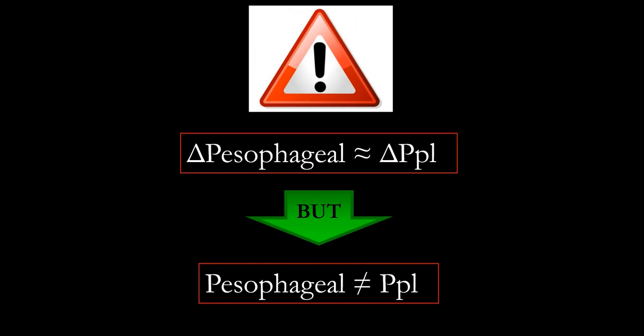What is the respiratory drive? If you take the esophageal pressure swings — what does it mean to look at pressure support without knowing what the patient does inside? I can set 20, 15, or 5 and have the same tidal volume, maybe. But look at what's happening inside — the swings may be 0, then 10, then 20. Without the pleural pressure, you have no idea of what's going on.